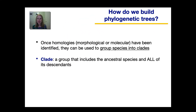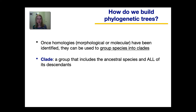So how do we begin building a phylogenetic tree? When you have a group of species, once you've identified the homologies — and the homologies can be morphological or molecular or other types — then you can use those homologies to begin grouping the species into clades. A clade is a group that includes the ancestral species and all of its descendants.